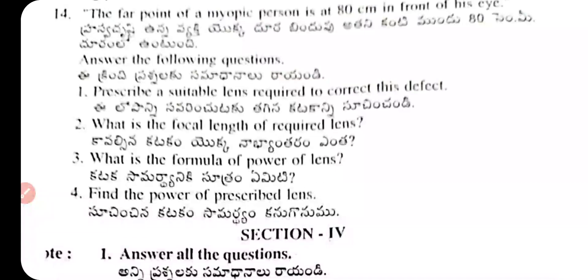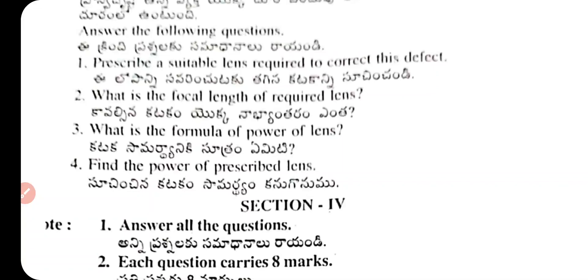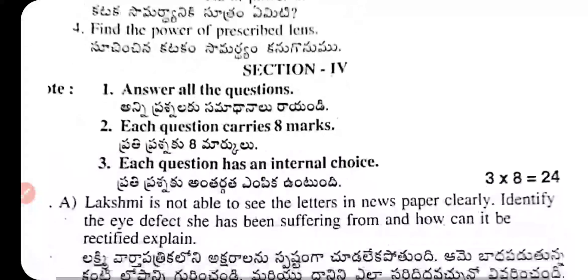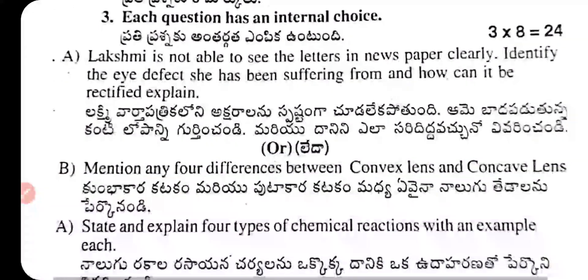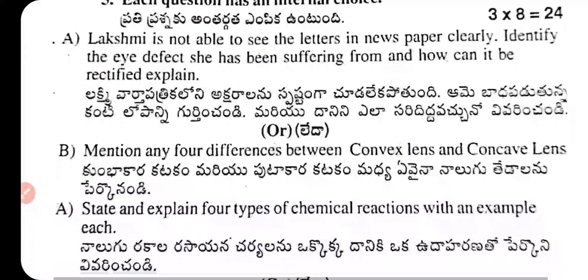Question 14 numerical: The far point of a myopic person is 80 cm in front of his eye. Prescribe a suitable lens to correct this defect, find the focal length of the required lens, and state the formula for power of a lens.